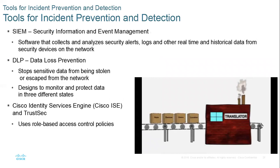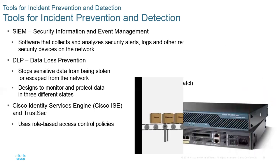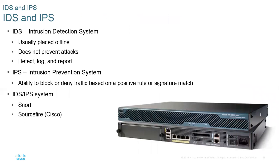You want to differentiate between SIEM, DLP, and Cisco's Identity Services Engine (ISE). SIEM — Security Information and Event Management — is a software; SolarWinds has a tool that can do security analysis. DLP is Data Loss Prevention — you want to monitor and detect when something has been stolen. There are different ways to implement that. IPS detects and prevents; IDS only detects. Some tools combine both capabilities.